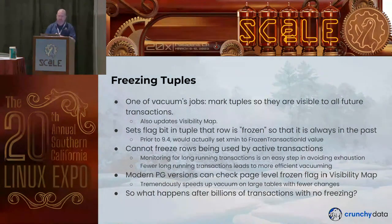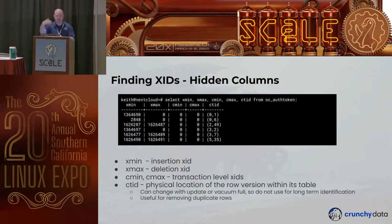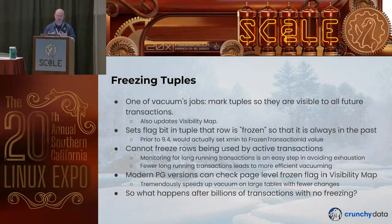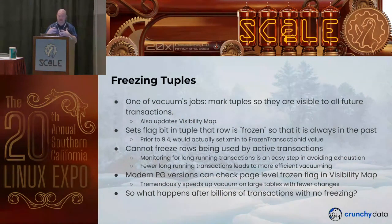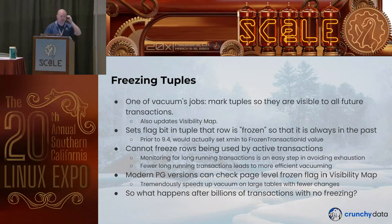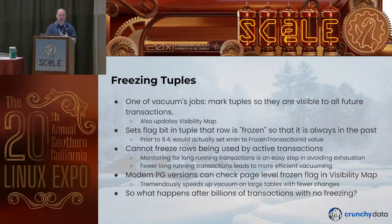Modern versions of PostgreSQL don't actually reset the xmin number to 2 anymore. PostgreSQL 9.4 and earlier used to set the xmin value back down to 2, the frozen transaction ID. Modern versions are more efficient and just set a bit flag saying this tuple is frozen. Importantly, PostgreSQL cannot freeze a row if there are any open transactions using that row — that's why you want to monitor for long-running transactions, because they prevent vacuum from cleaning up old rows and marking them as frozen.